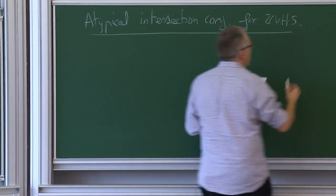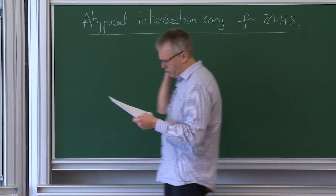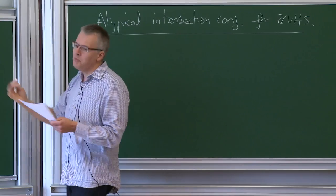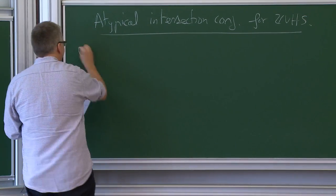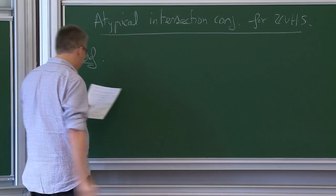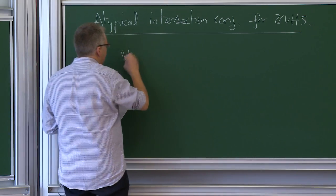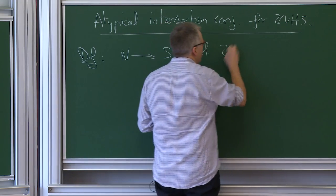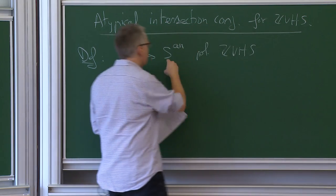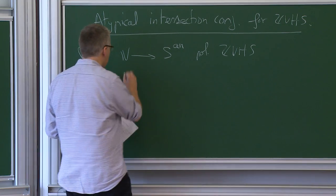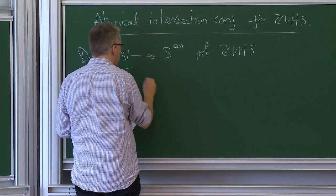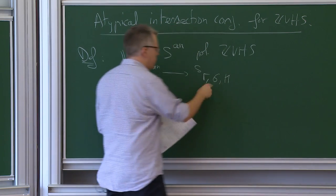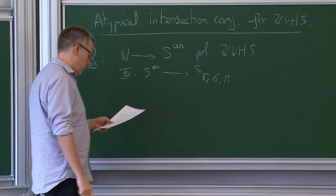This is a set of conjectures that I developed, that I wrote like three or four years ago. So you start as usual: you have your polarizable Z-VHS on S, which is a smooth quasi-projective variety. You get an associated period map, where G is the generic Mumford-Tate group for V.